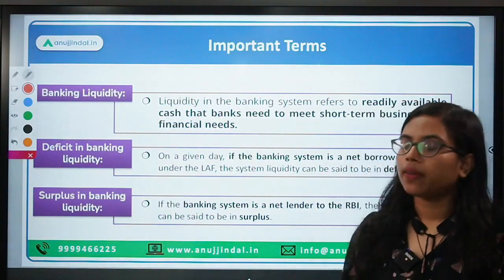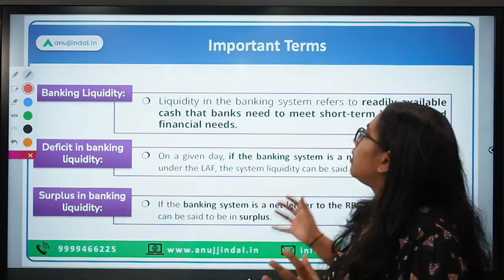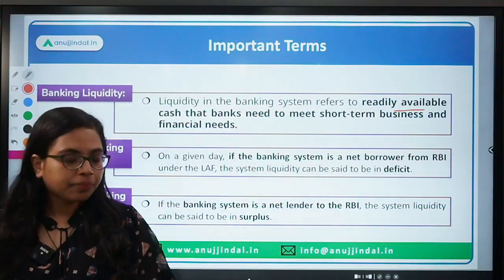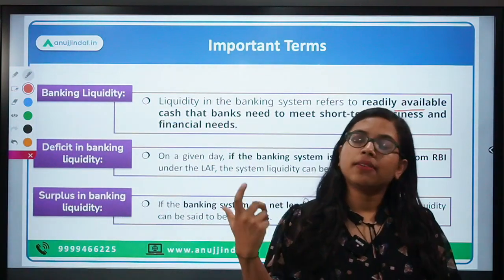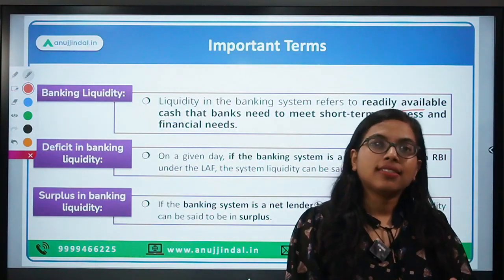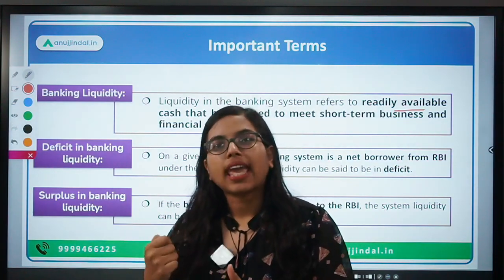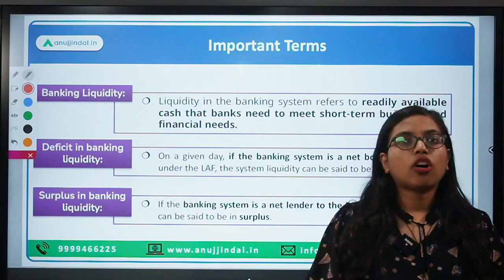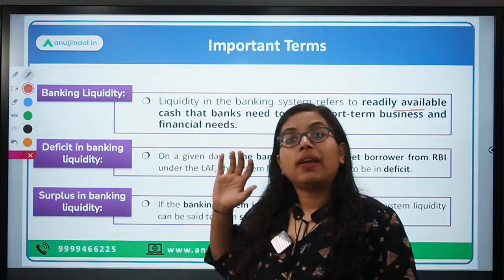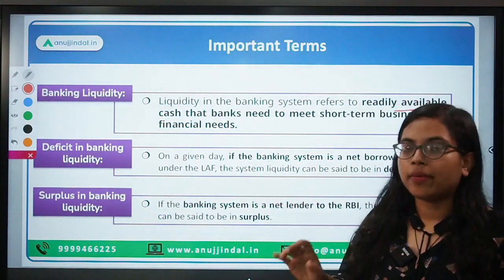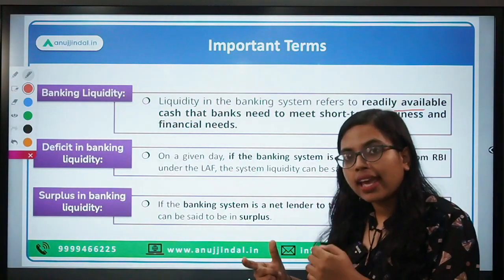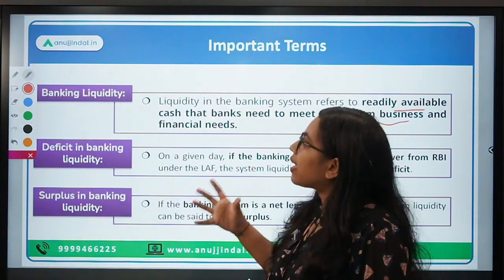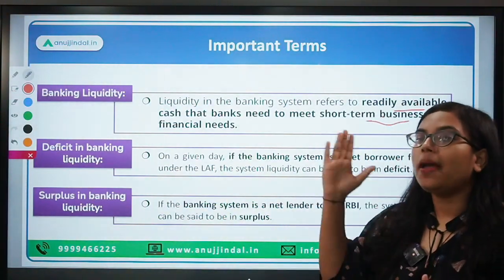Banking liquidity is a term that talks about the available cash that is readily available to the banks in order to meet any of their business or financial needs. Banks have to be readily available with certain cash in order to meet the demands of depositors. Banks are also required to maintain reserve requirements — CRR and SLR — compulsorily at all points in time. When these reserves are low, they take certain loans from the interbank call market. Banking liquidity refers to the readily available cash in the entire banking system.